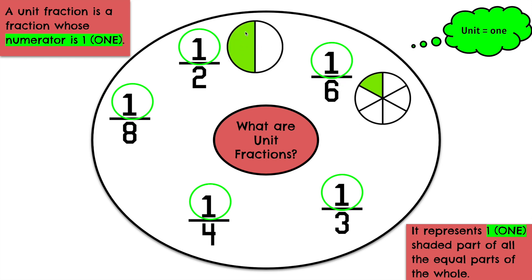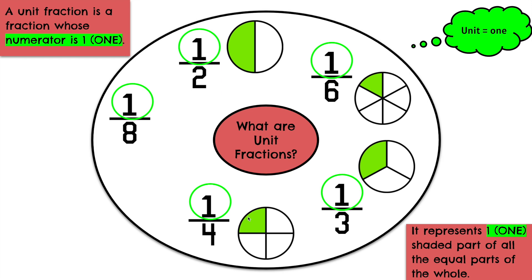One of these two equal parts would be 1 half. One of these three parts would be 1 third. One of these four parts would be 1 fourth — each one is worth 1 fourth. Here we have 1 eighth; each one individually is worth 1 eighth. And remember, unit fractions represent one shaded part of all the equal parts of the whole.